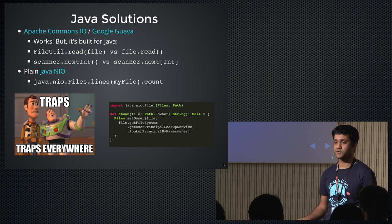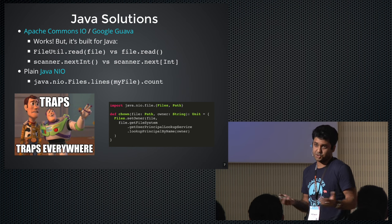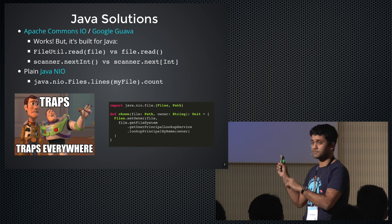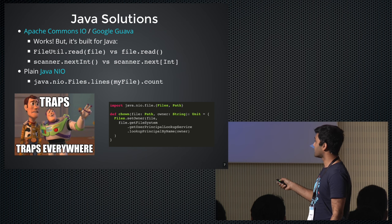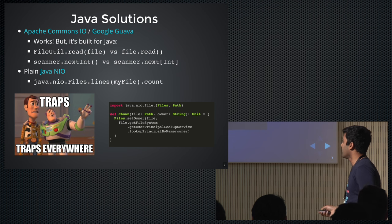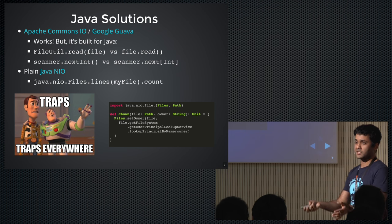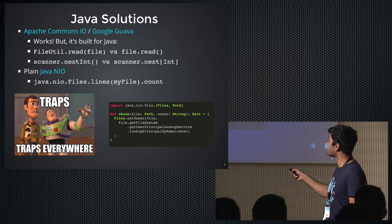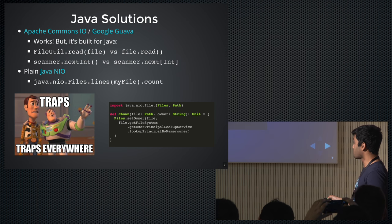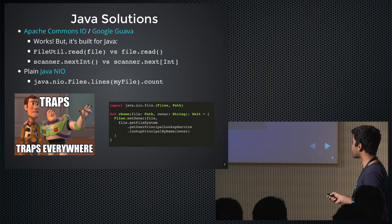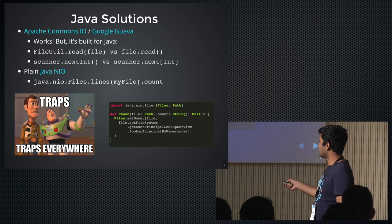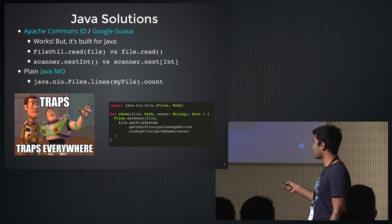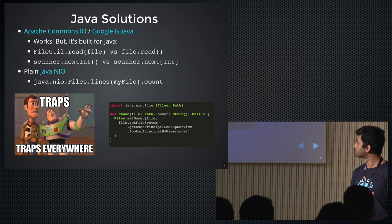Plain Java I/O, as I showed before, is full of traps. Don't use it. If you want to count the number of lines in a file, it looks simple but has a bug — it leaves a file handler open, and you wouldn't know because it returns something that needs to be closed. And something as simple as changing the ownership of a file given a string is quite verbose: you do Files.setOwner, get the file system, get the UserPrincipalLookupService, and lookupPrincipalByName. There's no way you would have guessed to do this. You just want an API that takes a file and a string and lets you chown it.